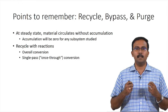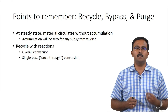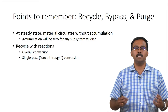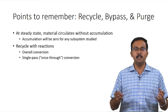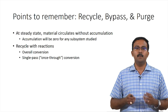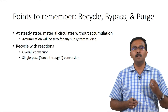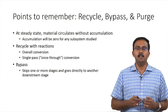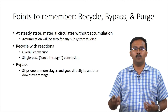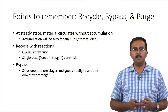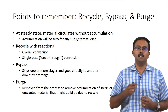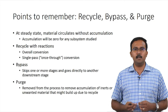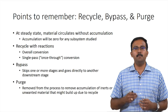Recycle with reactions can have two types of conversions: overall conversion and single pass conversion. Overall conversion is the conversion for the entire system including the recycle stream, whereas single pass conversion is what happens when reactants pass through the reactor only once. Bypass is a process where a stream skips one or more stages to go directly to a downstream stage. Purge is a process where some components are removed to avoid accumulation of inerts or other unwanted materials that might build up due to recycle.